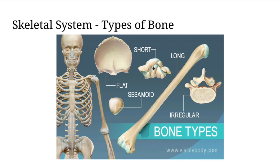Next we have sesamoid bones. Those are going to be suspended in a tendon, so right here we have the patella or your kneecap. Next is a long bone. That is called a long bone because it is long, it's longer than it is wide. We have that in our extremities, so an example would be our humerus in our upper arm.